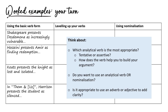Now it's over to you. I've put some suggested sentences in the left-hand column. If you're studying different texts, think about your own typical sentence — 'Shakespeare presents King Lear as...' or 'Shakespeare presents Romeo as...' — pick your author and main character. Then think about how you could level up your verb choices and use nominalisation; there's a box in the centre for your thinking. Everyone will come up with something different, so I won't show answers, but practice does make perfect. Thanks very much, and I hope you watch the rest of the videos in this series.